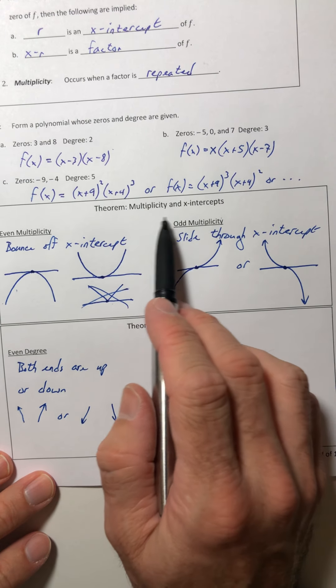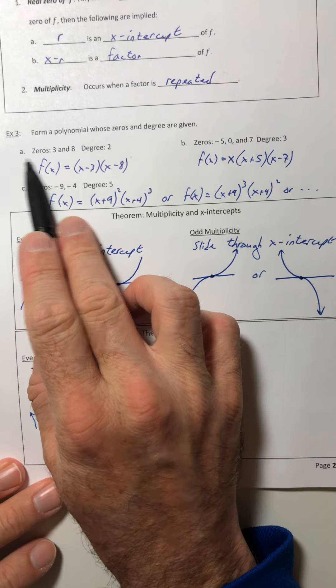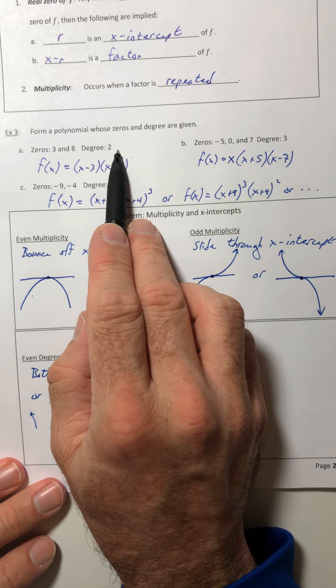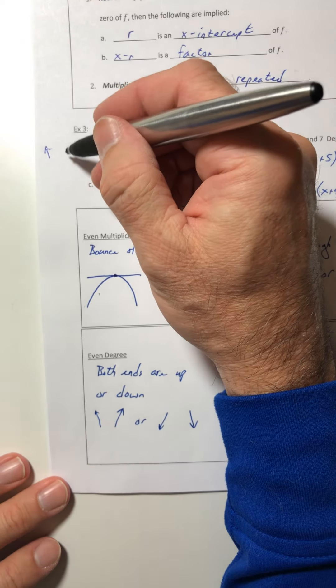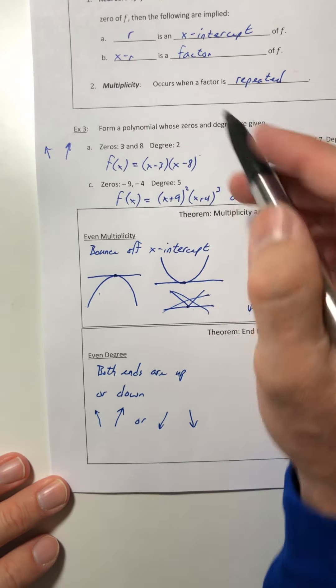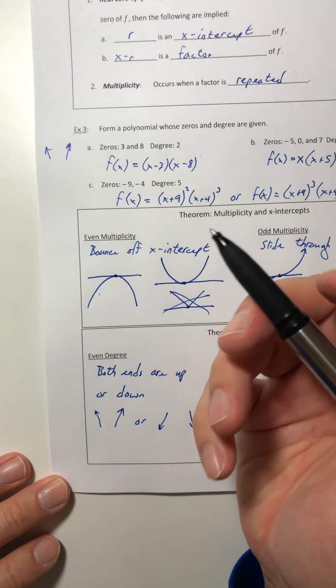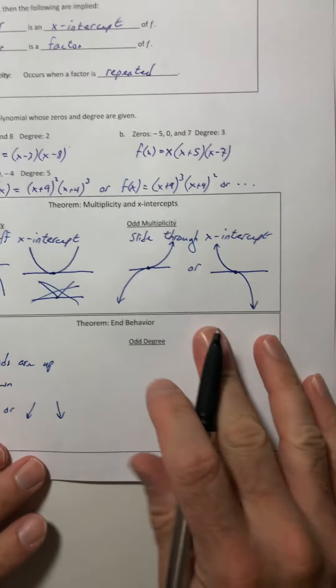So if I go back to like example 3a degree two, I know its graph is going to have both ends going up and then I would just have to fill in the right intercepts and stuff.